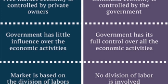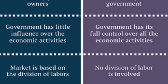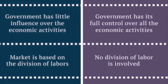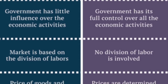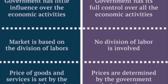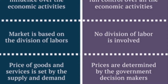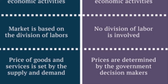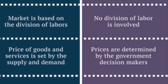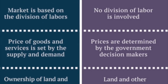In a socialist economy, of course, it's not full control, but certainly a large degree of control over all economic activities. In a free market economy, the market is based on the division of labor, whereas in a command economy, no division of labor is generally involved. In a free market economy, the price of goods and services is set by supply and demand, but in a command economy, prices are determined by government decision makers.